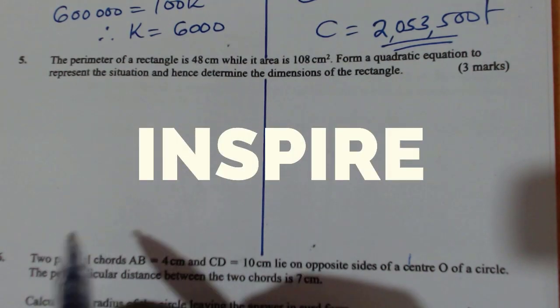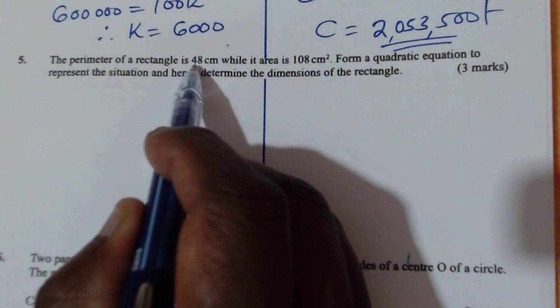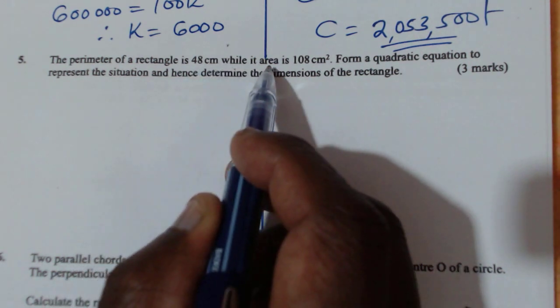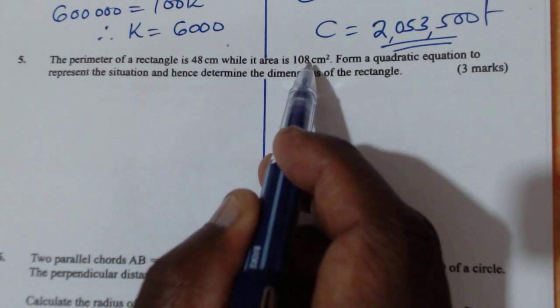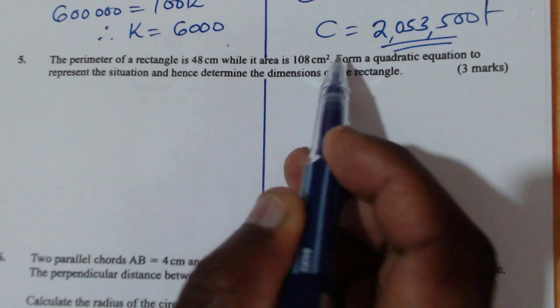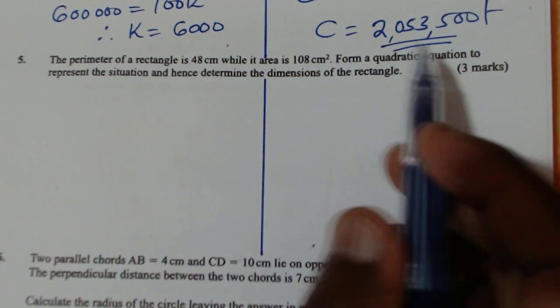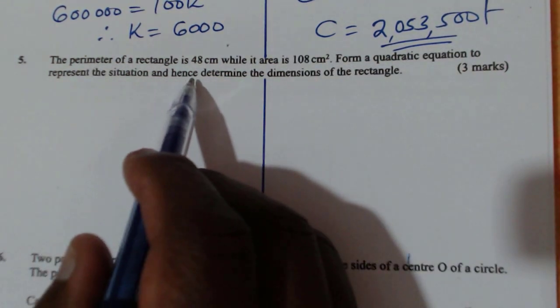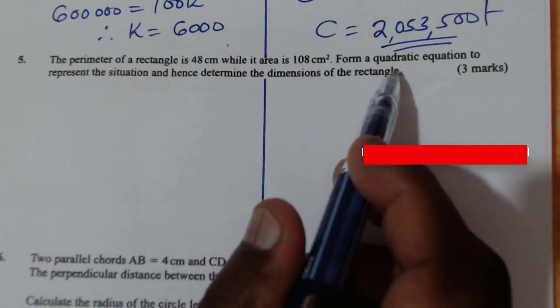Question number five. The perimeter of a rectangle is 48 centimeters, while its area is 108 centimeters squared. Form a quadratic equation to represent the situation and hence determine the dimensions of the rectangle.